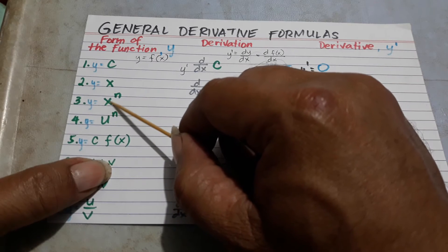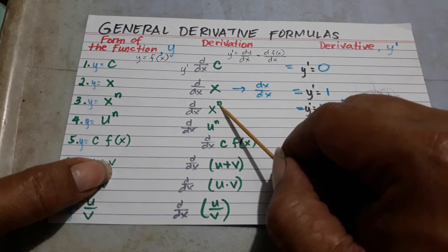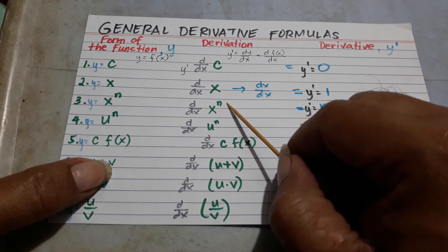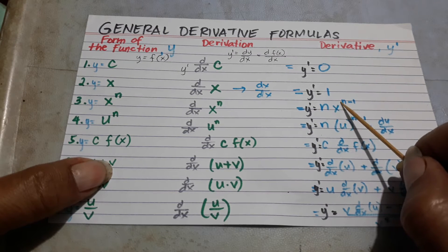If it is x to the n, so the rule there, derivative of x to the n, is you place n in front, then you subtract 1 from n, so that becomes n times x raised to n minus 1.